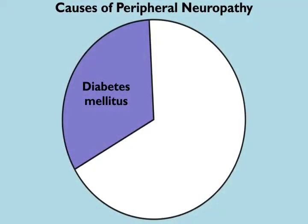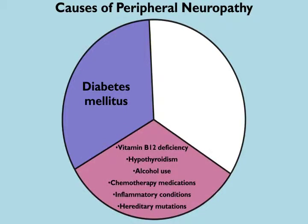In about one-third of patients, neuropathy is caused by diabetes mellitus. In another third, neuropathy results from causes such as vitamin B12 deficiency, hypothyroidism, alcohol use, chemotherapy medications, inflammatory conditions, and hereditary mutations.